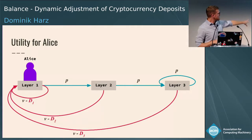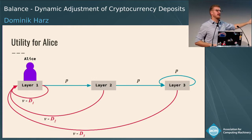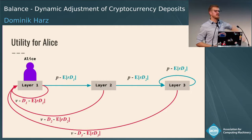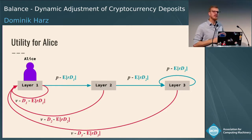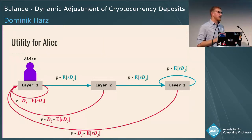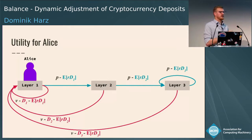We add one more element to the utilities: the opportunity cost on locked collateral, expressed as an expected opportunity cost using parameter R, which encodes how much Alice could earn by participating in some other protocol.